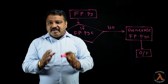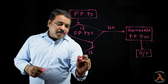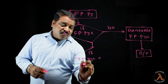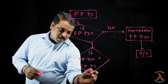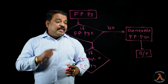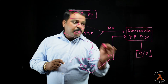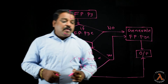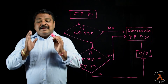If first_program.pyc already exists, it will verify whether the .pyc file's timestamp is lesser than the modified time of first_program.py. If the .pyc timestamp is lesser than the modified time of first_program.py, it will once again generate the .pyc file. Otherwise, it will use the existing first_program.pyc file and generate the output.